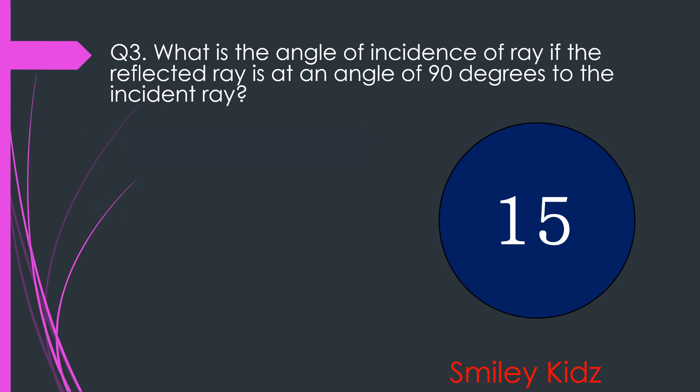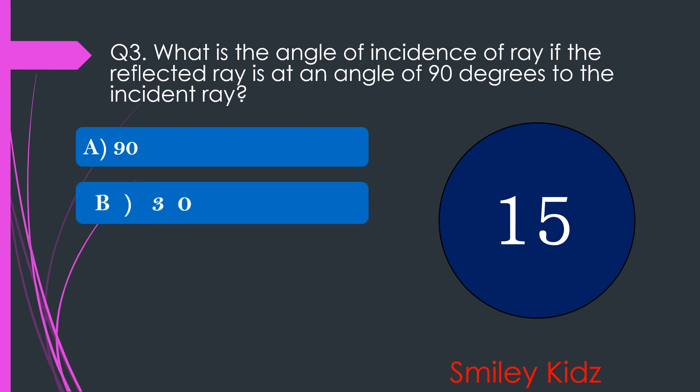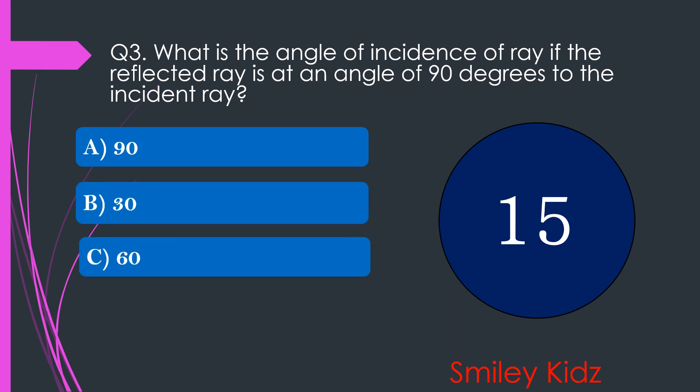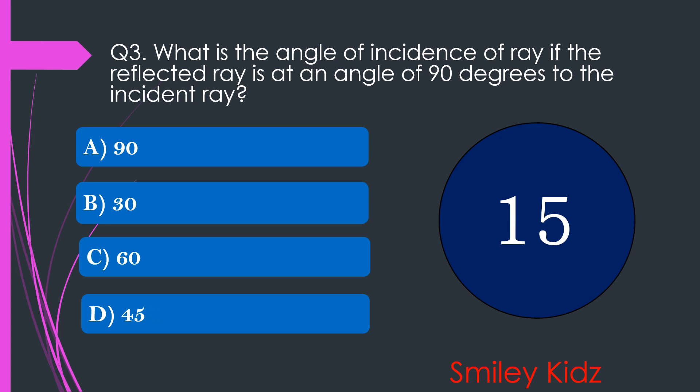Question number 3. What is the angle of incidence of the ray if the reflected ray is at an angle of 90 degrees to the incident ray? The options are A. 90, B. 30, C. 60, or D. 45. Your time starts now.